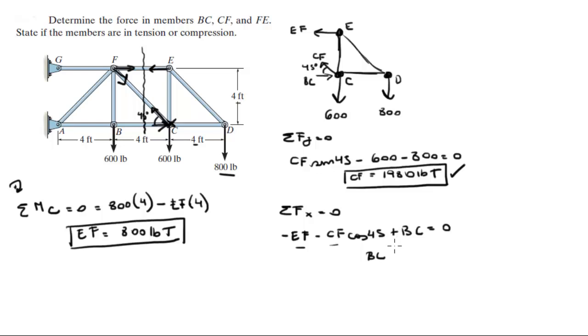So if you solve for BC and you plug in EF and CF, which we found before, you get that BC is equal to positive 2200 pounds, and it was going the right way, which means this one's going this way and it means that the member is in compression. So final answer for CF, final answer for BC, and final answer for EF.